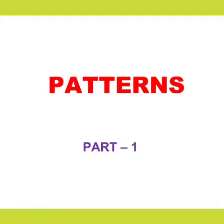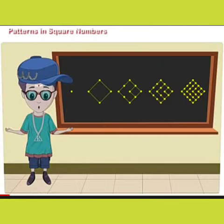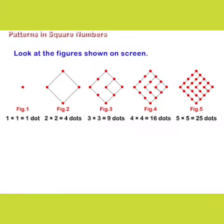Hello children, today we will study patterns in square numbers. Look at the figures shown on screen. Figure 1: 1 × 1 = 1 dot. Figure 2: 2 × 2 = 4 dots.